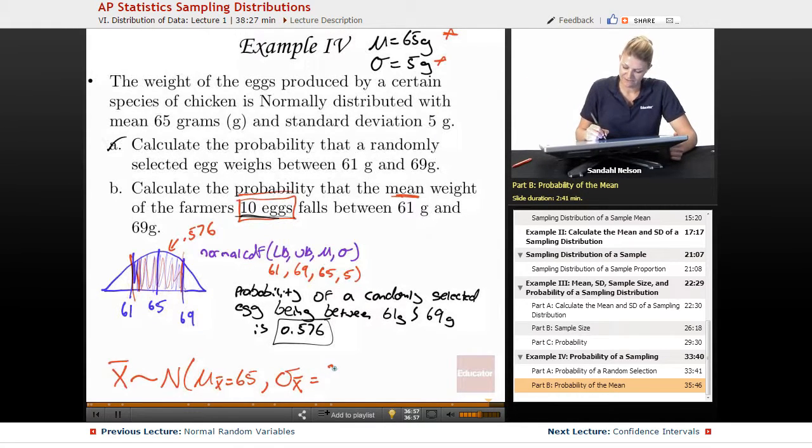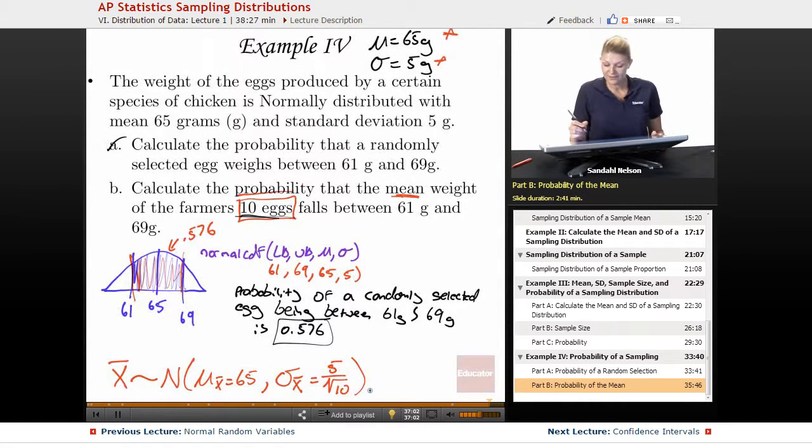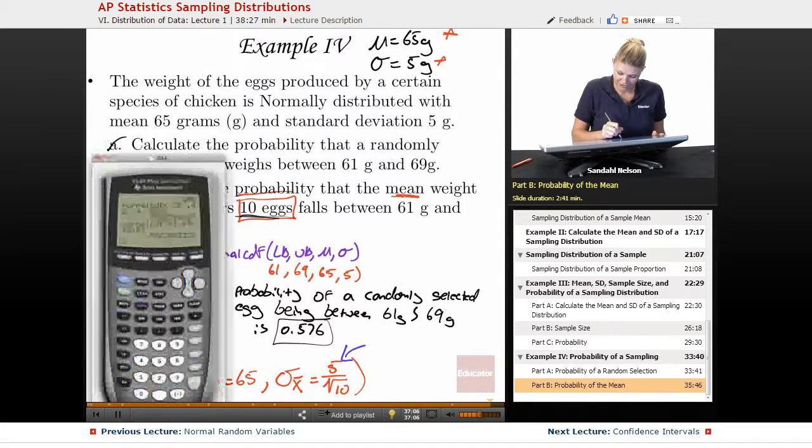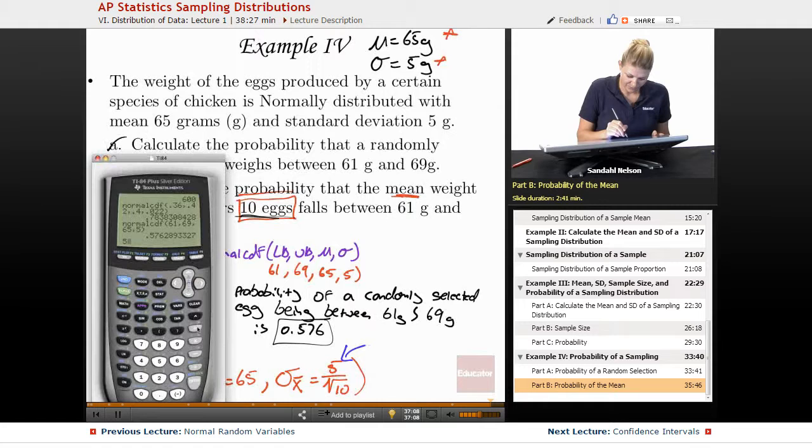is sigma, which is 5, over the square root of n, which is 10. So all we have to do is recalculate the standard deviation, which I think we already did, but we'll do it again, which is 1.58.